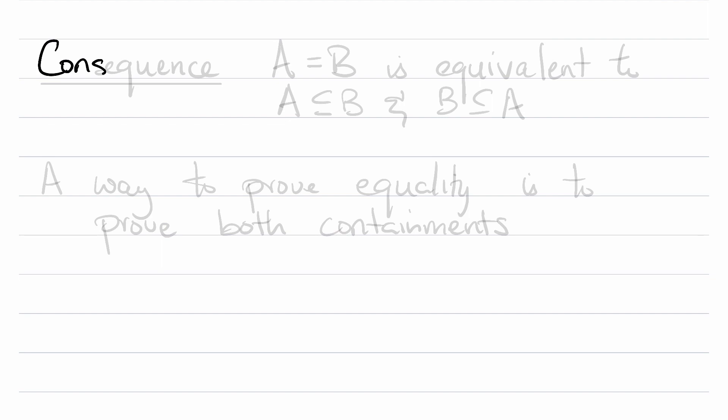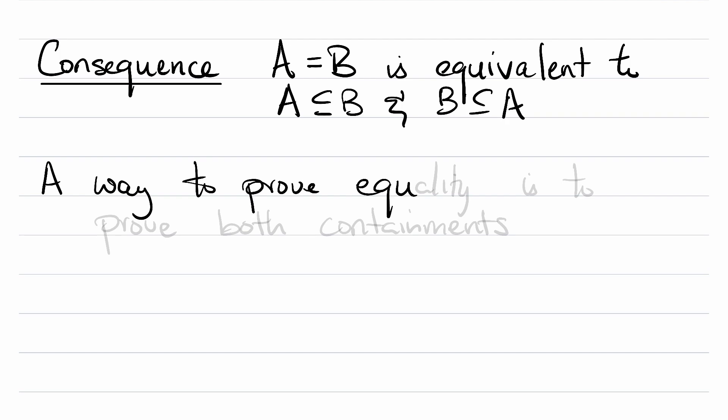You may be thinking that there's a relationship between equality and being a subset, and you're correct. Equality of two sets is equivalent, it turns out, to them being subsets of each other simultaneously. So A is equal to B is equivalent to A is a subset of B and B is a subset of A. And this means that a way to prove equality is to prove both containments.